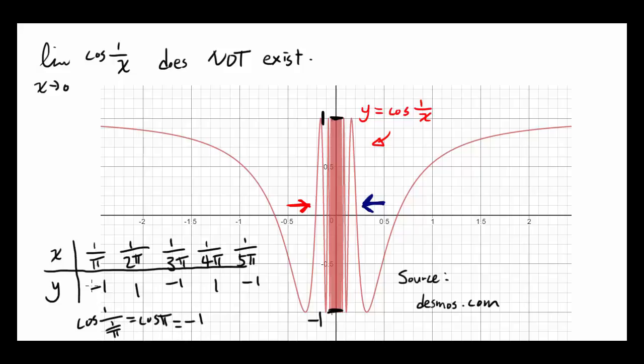And that's going to come out to be negative 1. When x is 1 over 2 pi, it's going to be 1, 1 over 3 pi negative 1, 1 over 4 pi is 1, 1 over 5 pi negative 1, and it's going to go on.